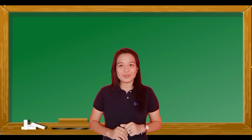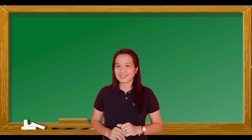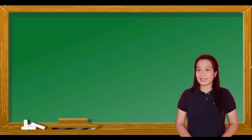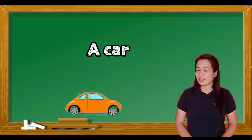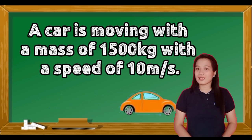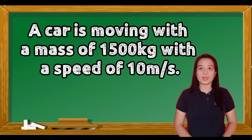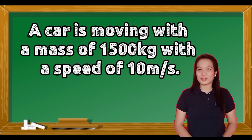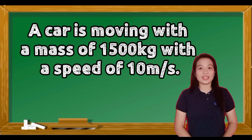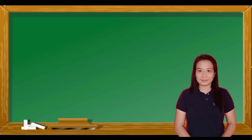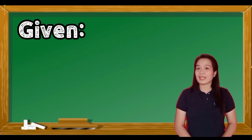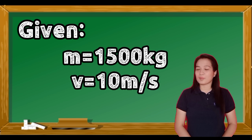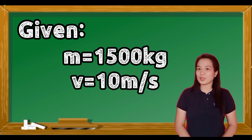Now let's try to solve for kinetic energy. Let's find the kinetic energy of a moving car. The car has a mass of 1500 kilograms and it's moving with a speed of 10 meters per second. Remember, we need to identify our given values first: mass is 1500 kilograms and velocity is 10 meters per second.